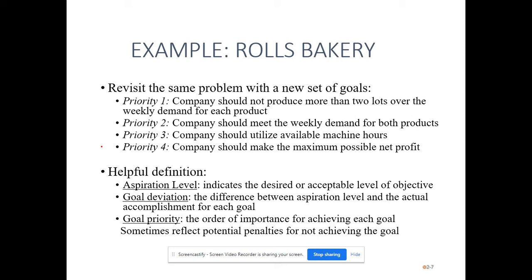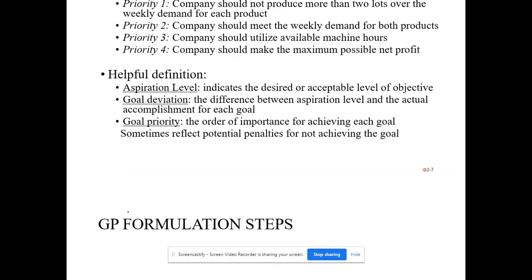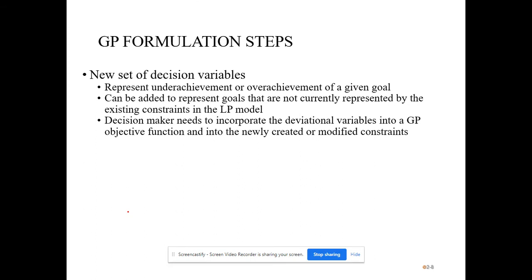In goal programming we have new definitions. Aspiration level indicates the desired or acceptable level of an objective. In addition to linear programming, we come up with a new set of decision variables. Each decision variable represents underachievement or overachievement of a given goal — these are called deviation variables. They are added to the existing constraints and incorporated into the objective function.